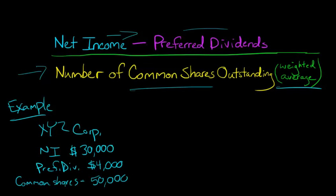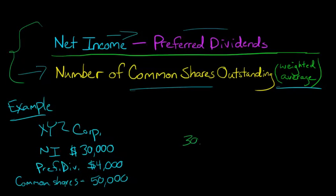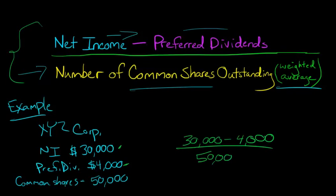So now we need to make some calculations here, and we're just going to plug in to our formula these numbers. So in the numerator we're going to have $30,000 net income, and then we subtract out the preferred dividends, because the common shareholders don't have any claim on that — that goes to preferred shareholders. So we divide this whole thing by the number of common shares outstanding, not total shares, common shares. So we've got $30,000 minus $4,000 divided by 50,000, and that gives us $0.52 a share.